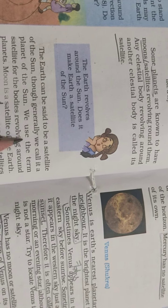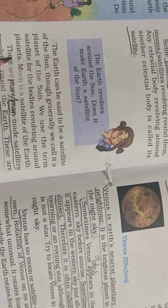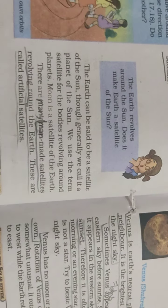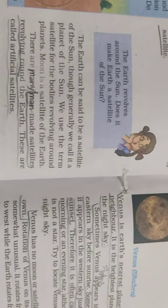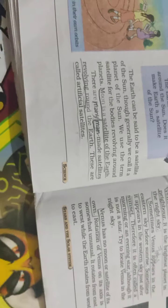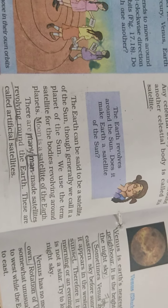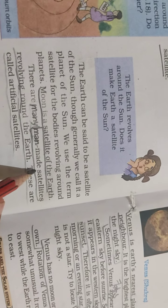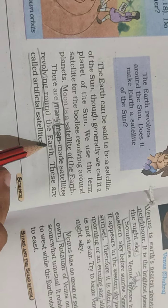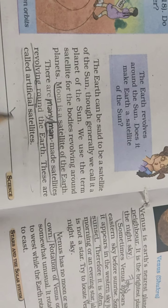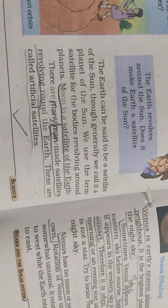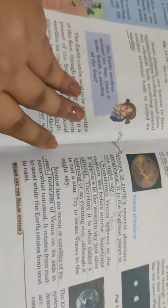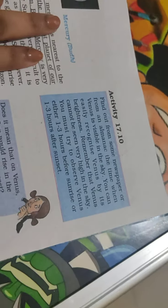We use the term 'satellite' for bodies revolving around a planet. The Moon is a satellite of Earth. There are many man-made satellites that move around Earth. These are called artificial satellites, which are human-made and not naturally present.